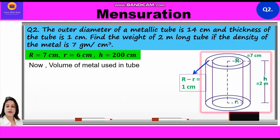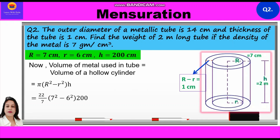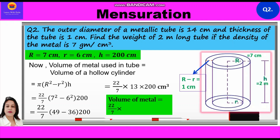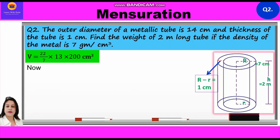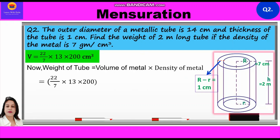Volume of metal used in tube = volume of hollow cylinder = π(R² − r²)·h = (22/7) × (7² − 6²) × 200 = (22/7) × (49 − 36) × 200 = (22/7) × 13 × 200 cm³. Weight of tube = volume × density = (22/7) × 13 × 200 × 7. The 7s cancel, giving 22 × 13 × 200 = 57,200 grams.